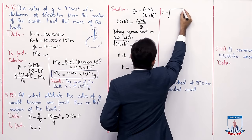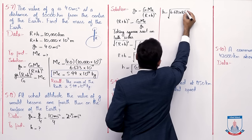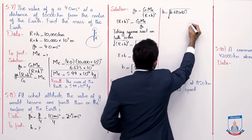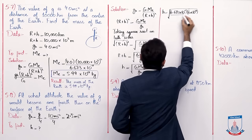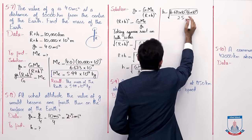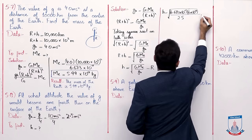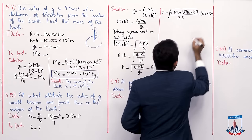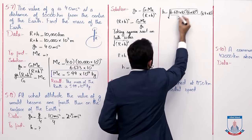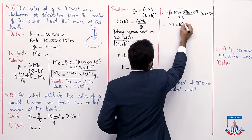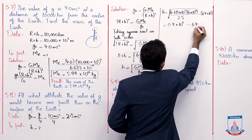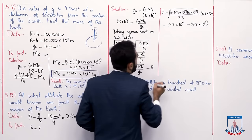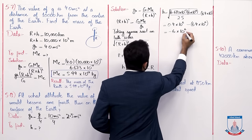Now h equals under root of: G value is 6.673 multiplied by 10 to the power minus 11, and mass of Earth is 6 multiplied by 10 to the power 24, divided by g_h which is 2.5 meter per second squared, minus r which is 6.4 multiplied by 10 to the power 6. Solving the first part gives 0.4 multiplied by 10 to the power 6, minus 6.4 multiplied by 10 to the power 6, giving minus 6 multiplied by 10 to the power 6 meter.